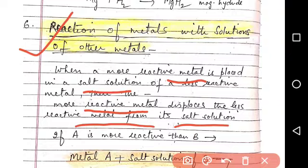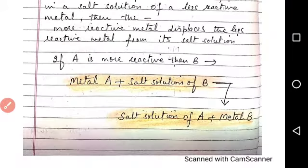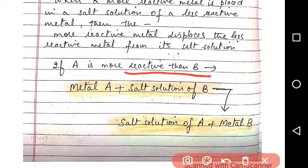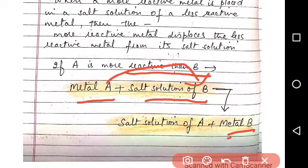When you have done different types of reaction, there you have studied this reaction. So, in displacement reaction, if A is a more reactive metal than B, then what happens when metal A is dissolved in a salt solution of B? Then the metal A displaces this B. B comes out in the form of metallic form and salt solution of A is formed.